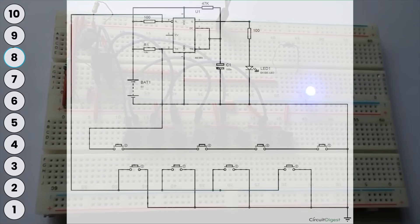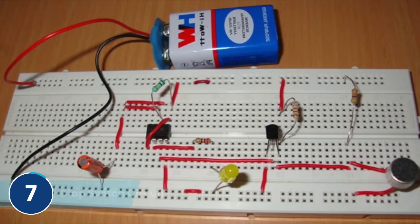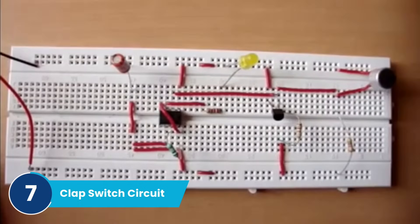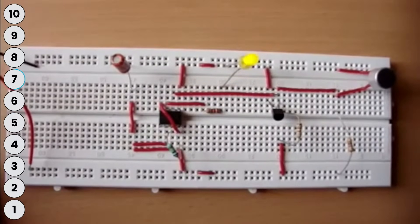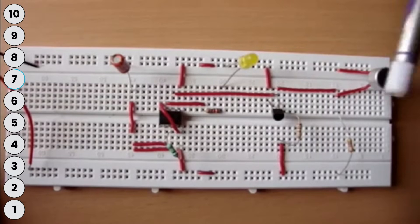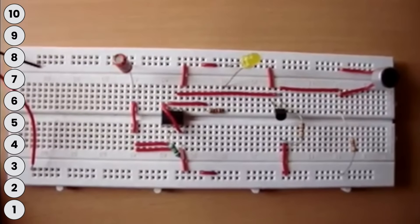Moving on at number seven on our list, we have the clap switch circuit. Yes, when you clap, this circuit turns on an LED and it is very easy to build. You can build it on a breadboard with just a condenser microphone, a 555 timer, a BC547 transistor, and an LED.